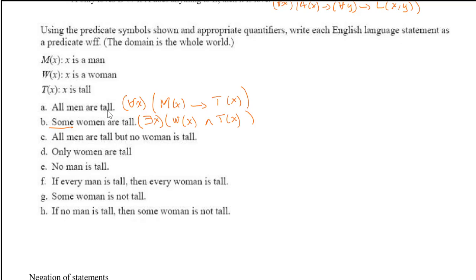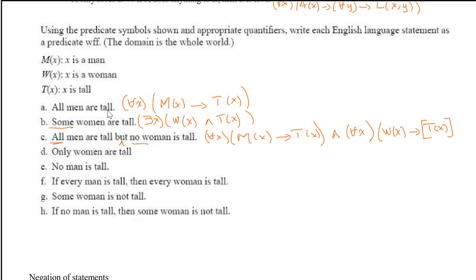'All men are tall but no woman is tall.' 'All men are tall' uses 'and' as the connector here: for all x, if that thing is a man then it is tall. But 'no woman is tall' means: for all x, if it is a woman then it is not tall — ∀x(M(x) → T(x)) ∧ ∀x(W(x) → ¬T(x)).